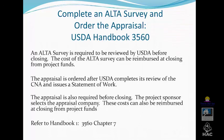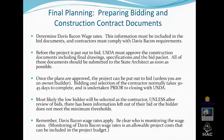Once the plans are approved, the project can be put out to bid — unless you're an owner builder. Bidding and selection of the contractor normally takes 30 to 45 days and can be undertaken prior to the USDA closing. The contractor just has to realize that if they're selected, construction won't start until financing closes, and usually there is a caveat written into the bid packet stating this is based on the financing and the closing of all the loans. Most likely your low bidder will be selected as the contractor, unless after reviewing the bids you find information left out or due diligence reveals issues. You also want to make sure that the people that bid on the project are not on the federal government debarment list.